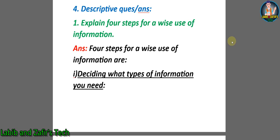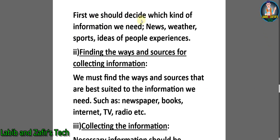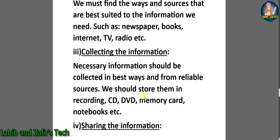Now let's go through some descriptive question answers. Number one: Explain four steps for a wise use of information. Answer: Step one — deciding what type of information you need. First we should decide which kind of information we need: news, weather, sports, ideas of people, experiences. Step two — finding the ways and sources for collecting information. We must find the ways and sources best suited to the information we need, such as newspapers, books, internet, TV, radio, etc.